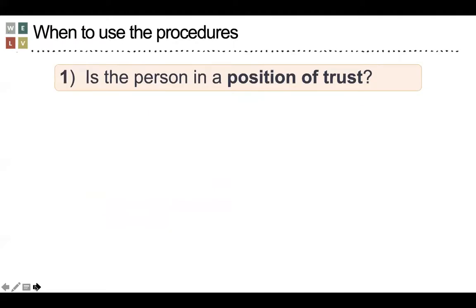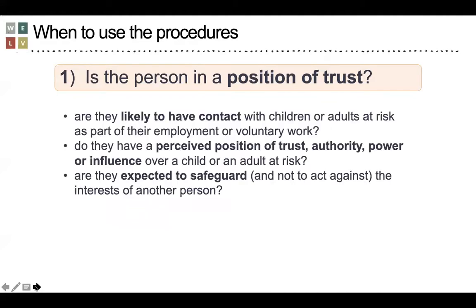So when should we use the procedures? The first question to ask is: is the person in a position of trust? When we refer to a position of trust, the procedures state the following: Are they likely to have contact with children or adults at risk as part of their employment or voluntary work? Do they have a perceived position of trust, authority, power or influence over a child or an adult at risk?